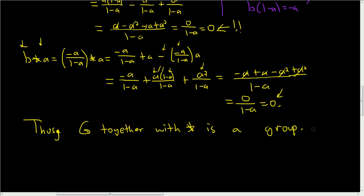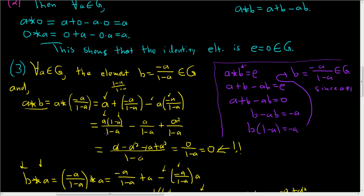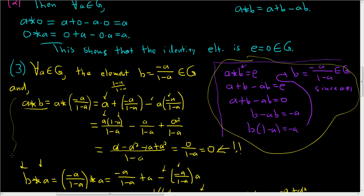So not the easiest example, but I hope this video helps. The key point is that the scratch work is how you figure things out — the formal write-up is how you prove it. It's really important to structure your work carefully. Also notice this subtle point: we did have to justify why the inverse element was in our set G.